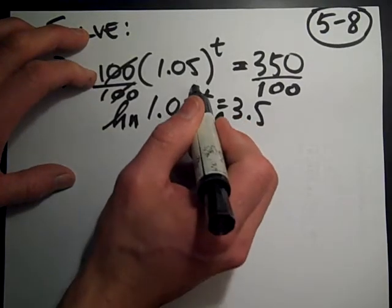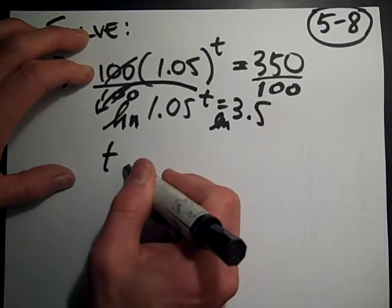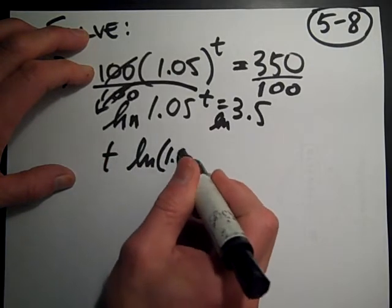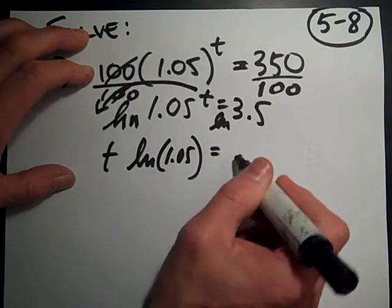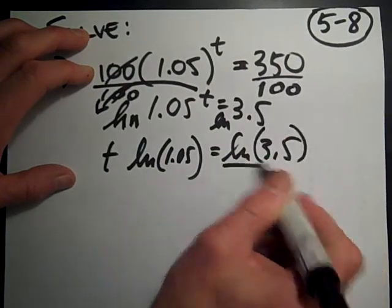And when I do that, that t comes out front. And so I've got t times the ln of 1.05 is equal to the ln of 3.5. Well, our calculator can find that.